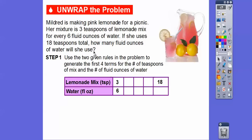Our rule is she adds three teaspoons for every six fluid ounces, so we're going to add three and add six. Add three to this and add six to this. Three plus three makes six, and six plus six makes 12. Six plus three is nine, and 12 plus six is 18. So we'll just keep doing that for the first four terms.